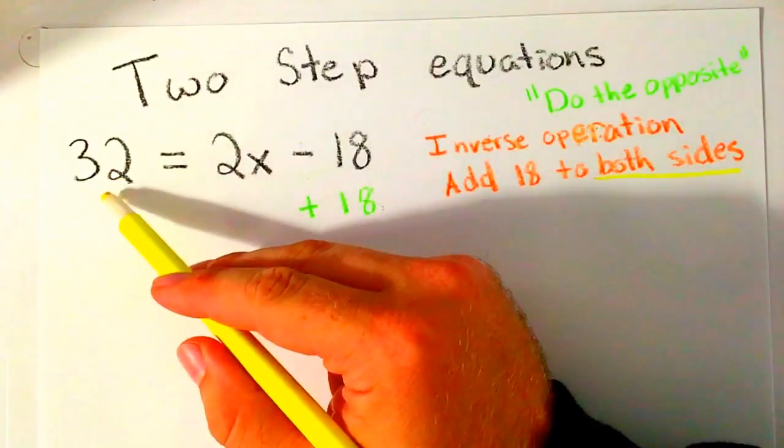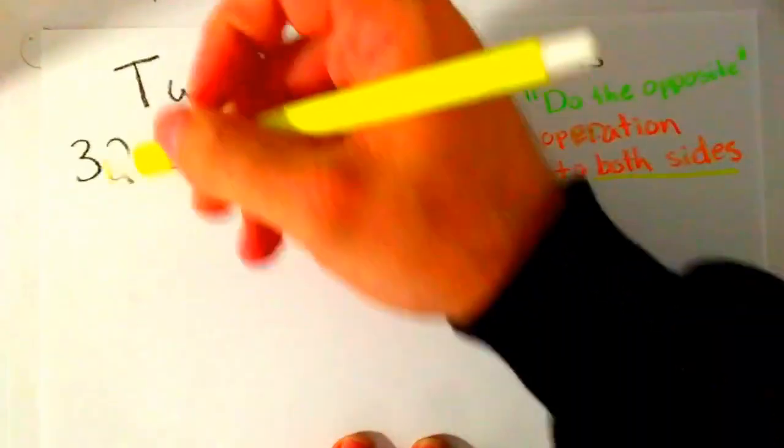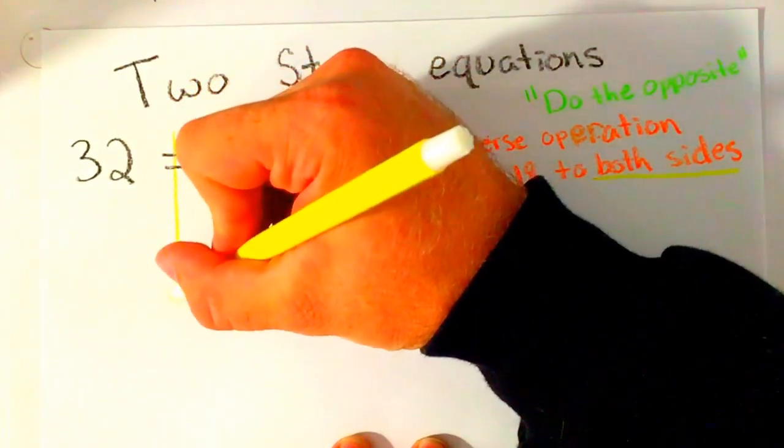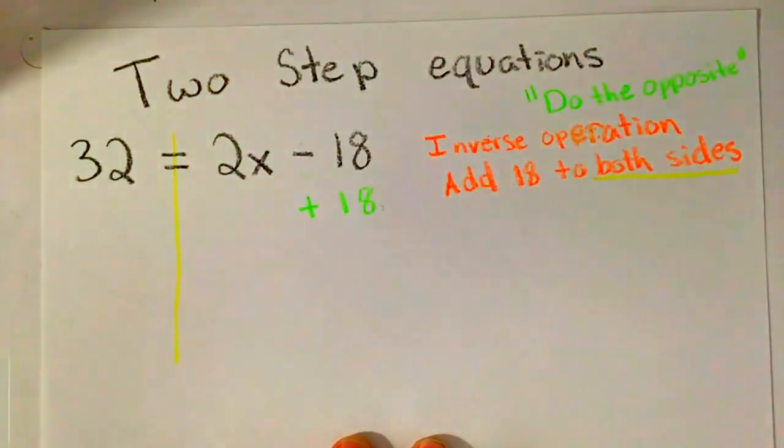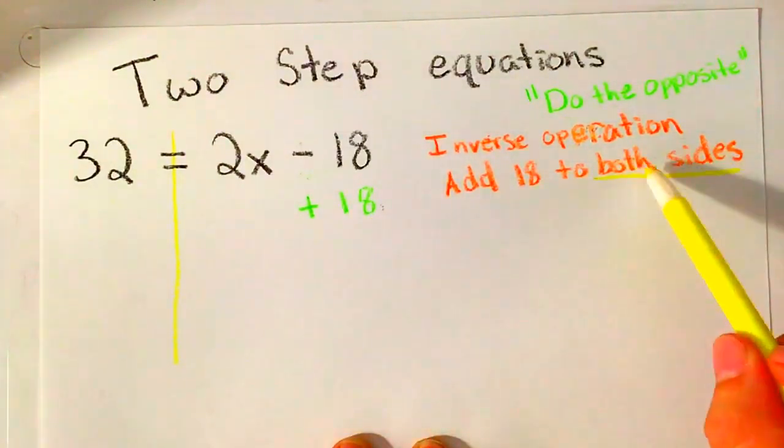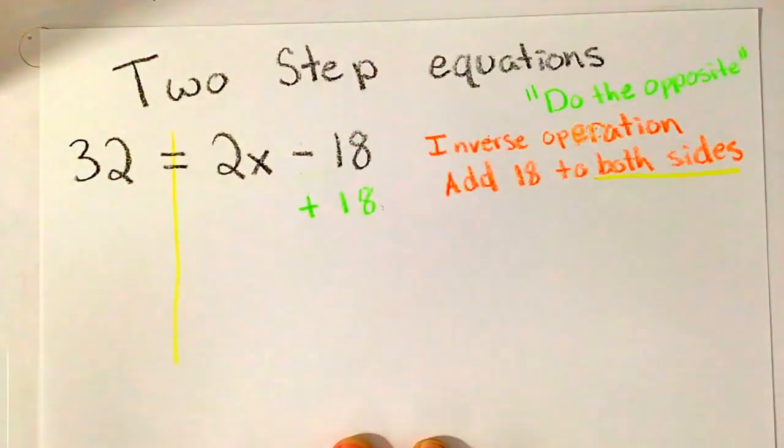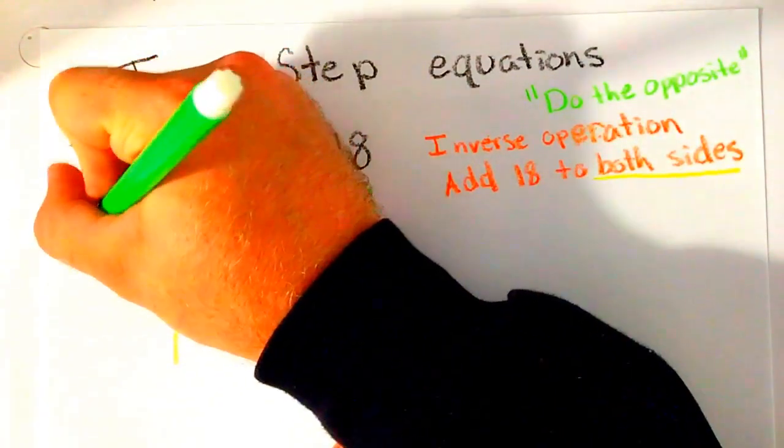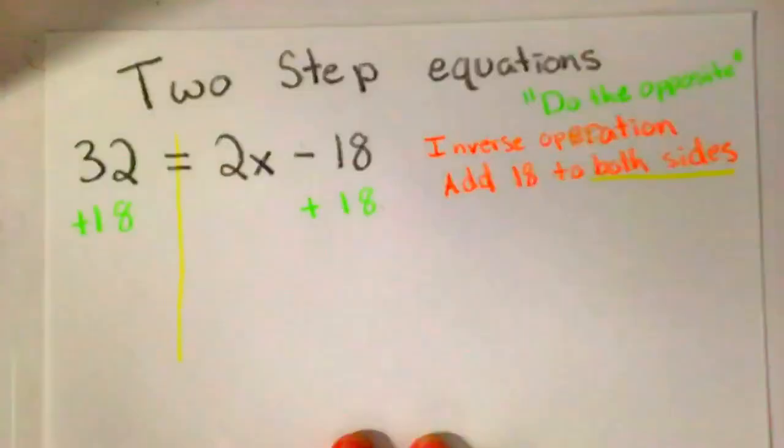Here's the left side of the equation, and here's the right side. Both sides means I have this imaginary line that runs down, and I have two sides of my equation. So if I add 18 to this side, the right side, I need to add 18 to the other side. This is called a property of equality.